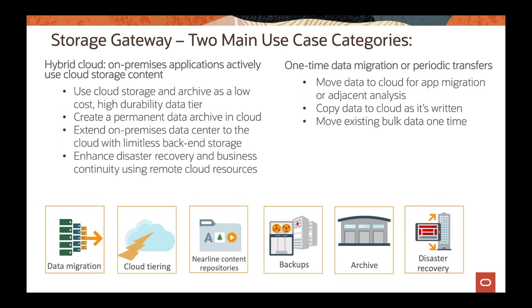The main use cases for storage gateway are hybrid cloud — where you have on-premises applications using storage in OCI — and one-time data migration. For migration, you can take data over internet connectivity using the storage gateway to copy data to the NFS mount point, which then synchronizes over to OCI object storage.